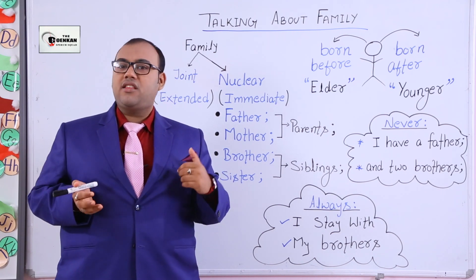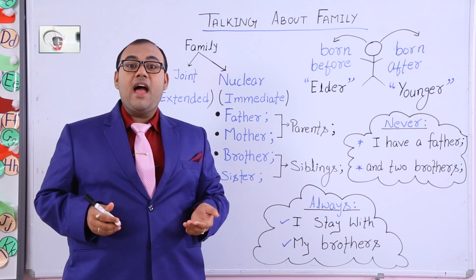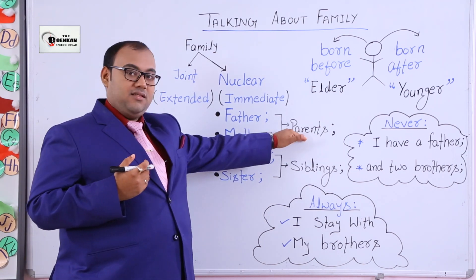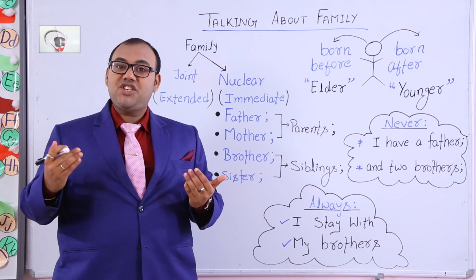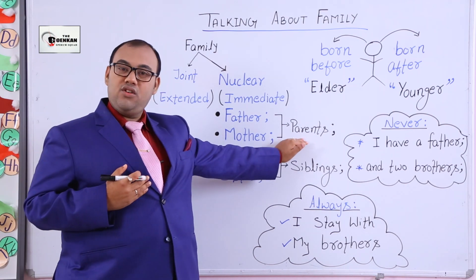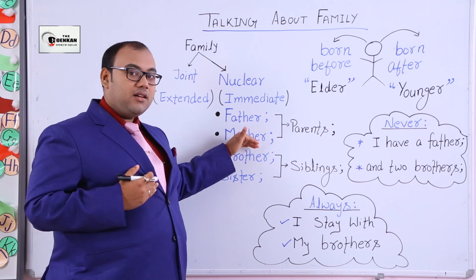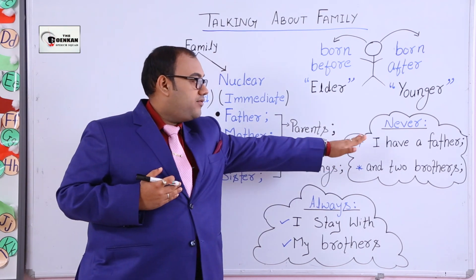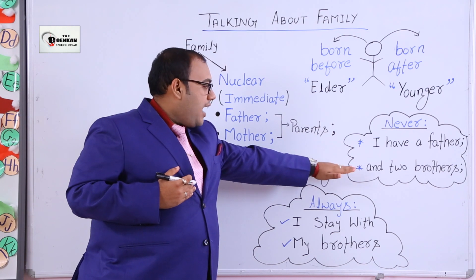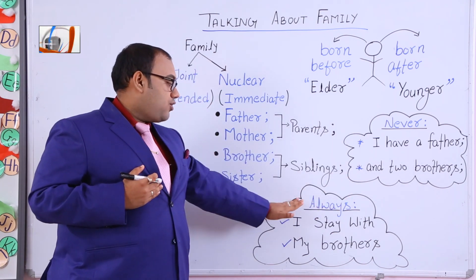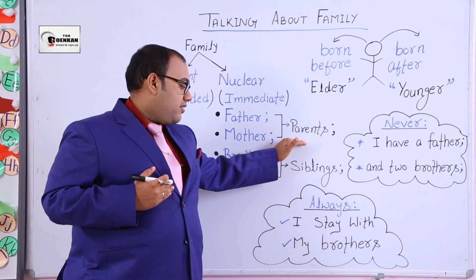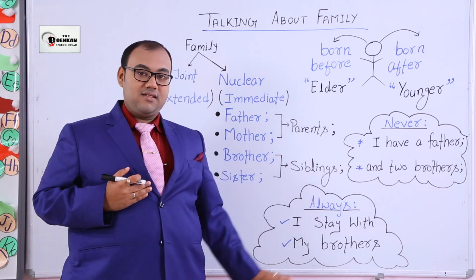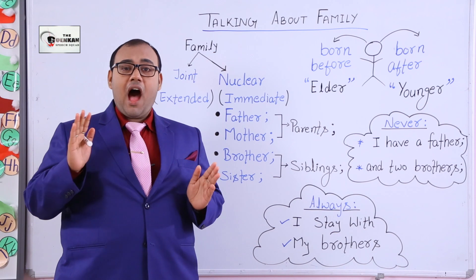If you don't have any brother or sister, then you are going to say 'I am the only child of my parents.' But you will not say 'I have a father, I have a mother' or 'I stay with two brothers' — never say that. We should always use 'I stay with my parents,' 'I am the only child of my parents,' or mention 'my brothers and sisters.'